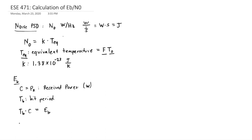Alternatively, I can write this as C divided by RB, because sometimes I have a bit rate, which is 1 over TB.